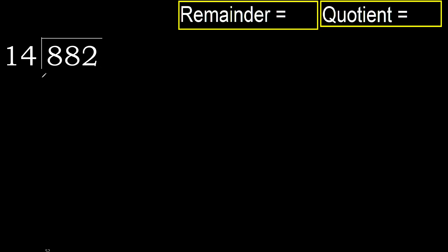882 divided by 14. 8 is less than 14, therefore next. 88 is not less, therefore with 88 — 14 multiplied by which number is nearest to 88?